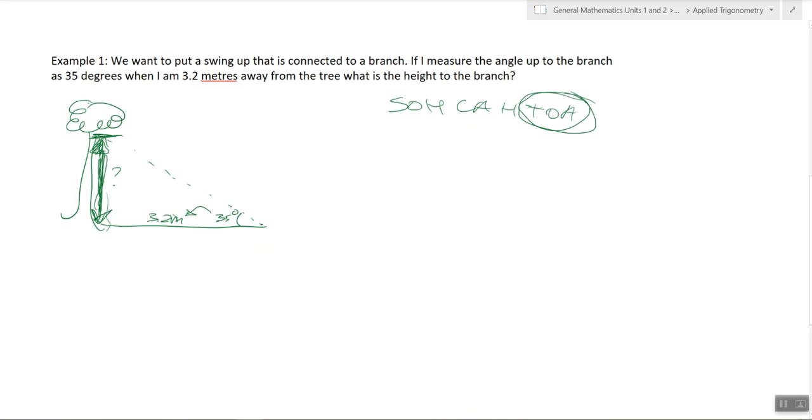So we're using TOA, which is tan. Angle equals opposite over adjacent. Angle, this is what, this is here, it's theta. So we can replace that theta with 35 degrees.